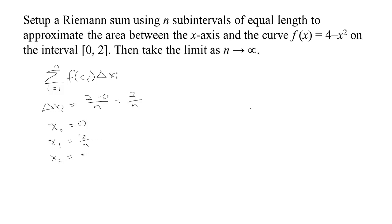For x₂, you'll take 2 over n plus 2 over n, so you'll have 2 times 2 over n. Add another gap of 2 over n to that and you'll be at your next right endpoint, which is 3 times 2 over n.